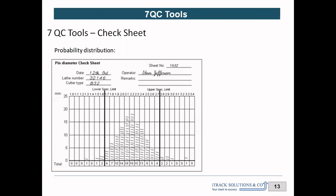Let me explain how this check sheet gets filled. If I pick up one of my machined components, measure the diameter, and identify it as 1.3 mm, I put one line at 1.3 mm. Similarly, if the next sample is 1.6 mm I put a line there, and if another falls at 3.3 mm I put a line there. I measure all samples and plot each diameter into its frequency distribution interval. When completed, the checklist gives a clear picture of the probability distribution of the data.